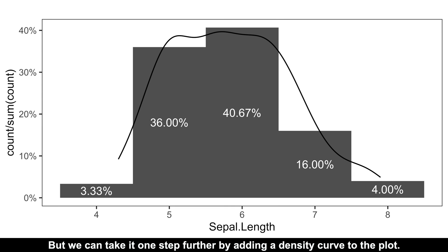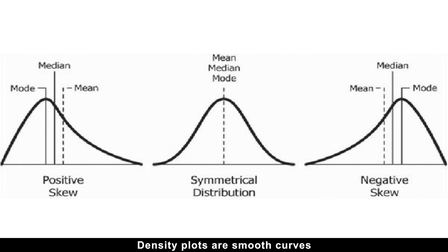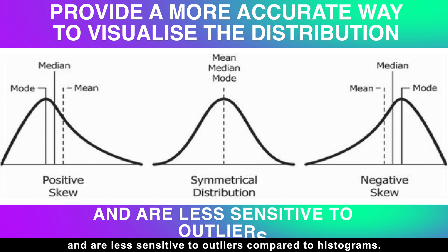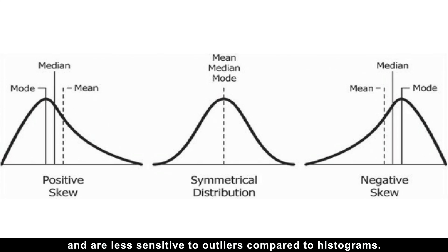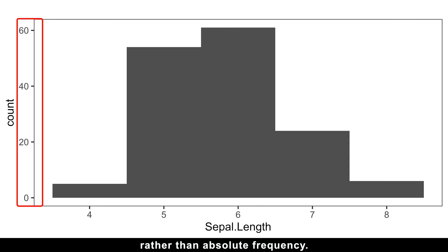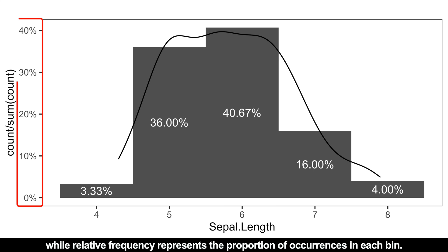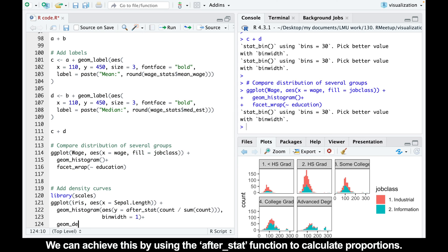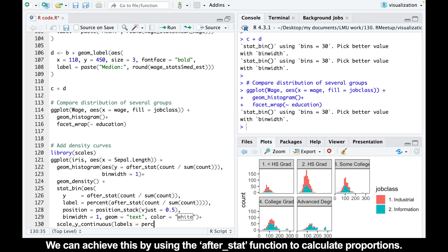But we can take it one step further by adding a density curve to the plot. Density plots are smooth curves that represent the distribution of the data similar to histograms. They provide a more accurate way to visualize the distribution and are less sensitive to outliers compared to histograms. To create a density plot in ggplot2, we first need to plot the histograms in terms of relative frequency rather than absolute frequency. Absolute frequency counts the natural occurrences in each bin, while relative frequency represents the proportion of occurrences in each bin.